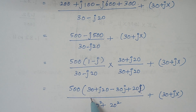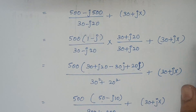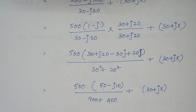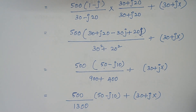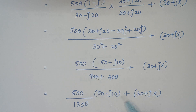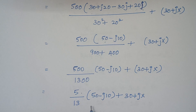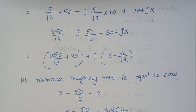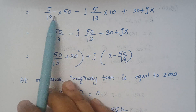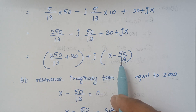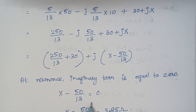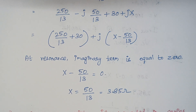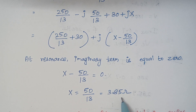Combining terms: 30 plus 20 gives 50 for the real part, and minus 30 plus 20 gives minus j10 for the imaginary part. Simplifying 500 divided by 1300 gives 5 by 13, with the rest remaining. After multiplying and rearranging real and imaginary terms, we equate the imaginary part to zero. This gives X minus 50/13 = 0, so X = 50/13, which gives the final answer of 3.85 ohms.